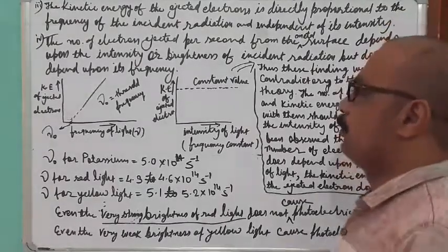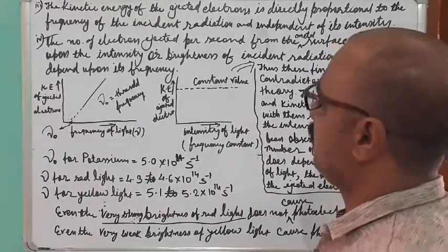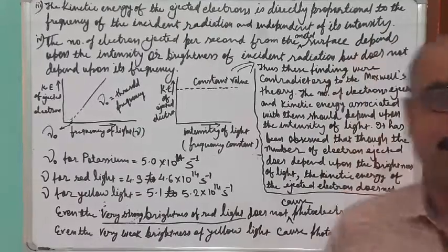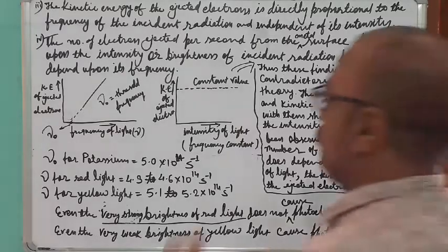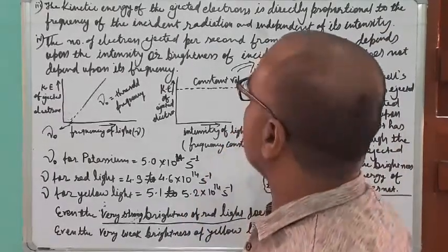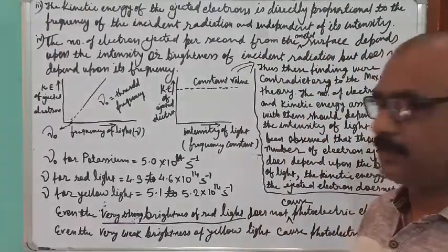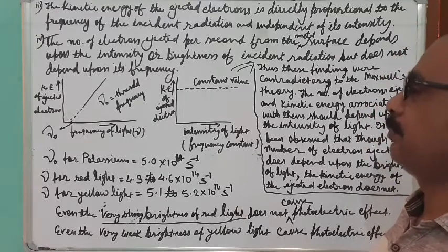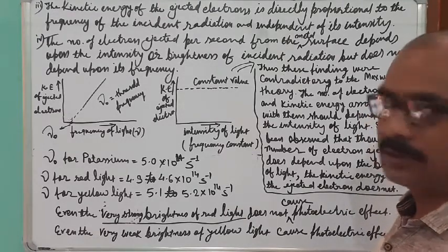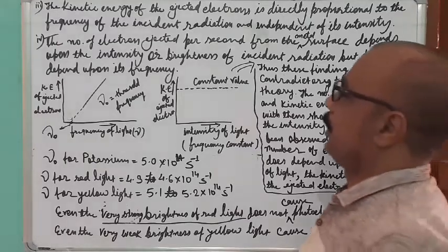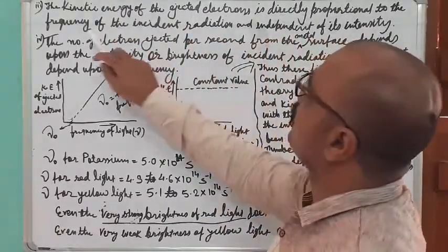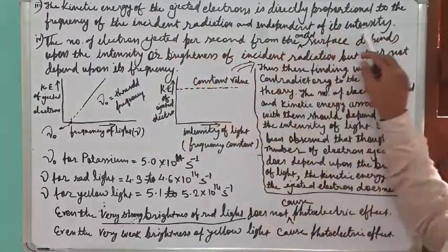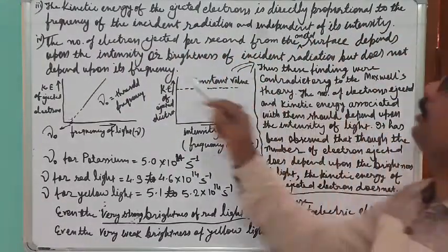Students, we are continuing with the photoelectric effect. Two points were already discussed regarding the photoelectric effect. Now the third point regarding the experimental observation: the kinetic energy of the ejected electron is directly proportional to the frequency of the incident radiation and independent of its intensity.